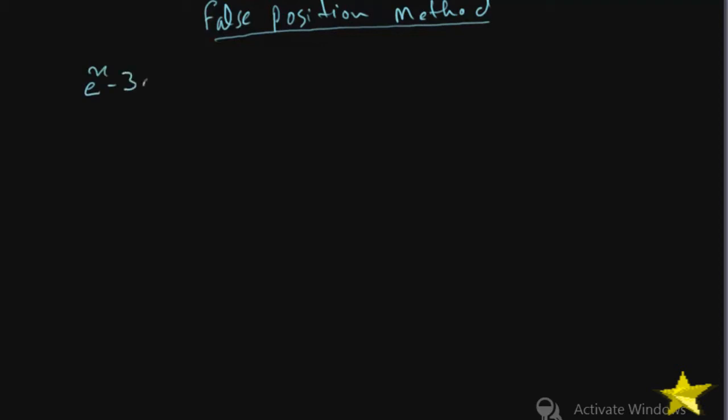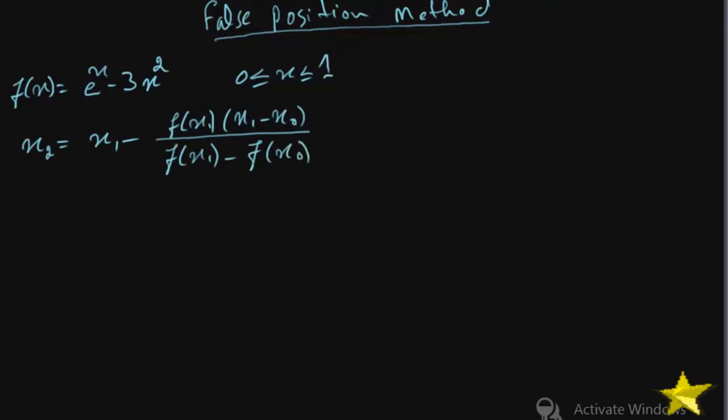e raised to the power x minus 3x square. For instance, it's any function of x, where x is ranging from 0 to 1. So the formula from secant method, which will be here, f of x2 equal to x1 minus f of x1 into x1 minus x0 over f of x1 minus f of x0. Take 0 is x0 and 1 is x1.